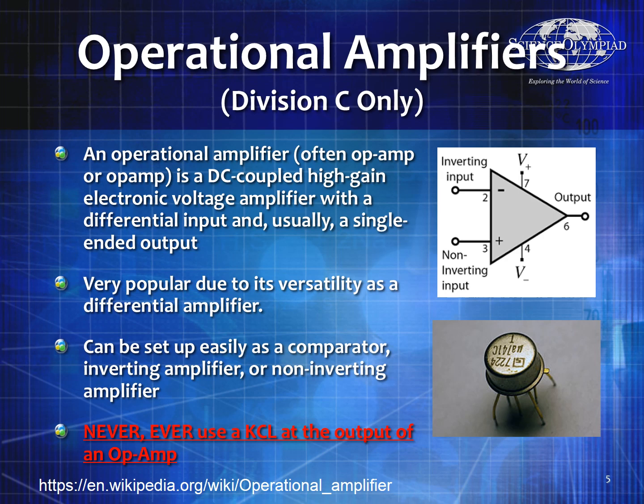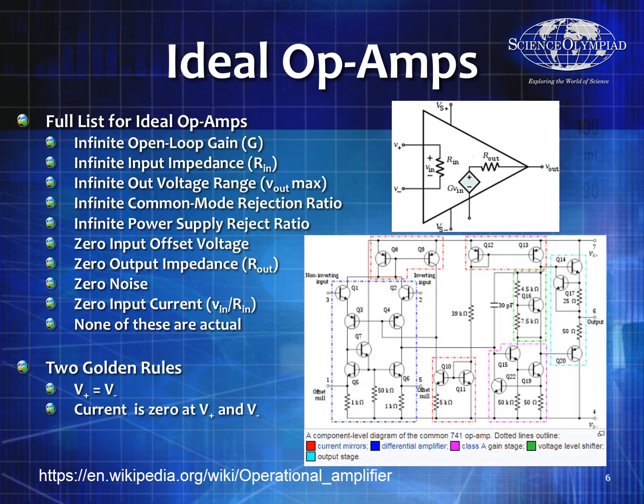We also went over operational amplifiers — the uses and design parameters for creating a comparator, an inverting amplifier, and a non-inverting amplifier. An ideal op-amp has infinite gain, infinite input resistance, and zero output resistance.